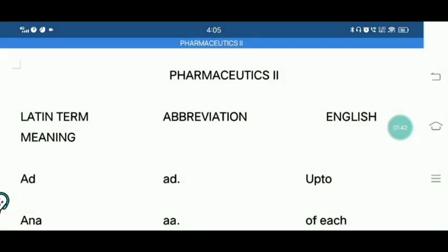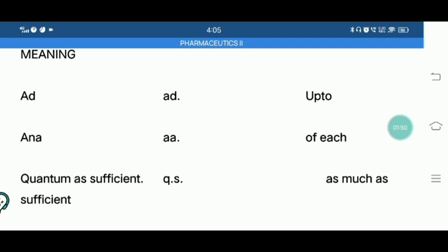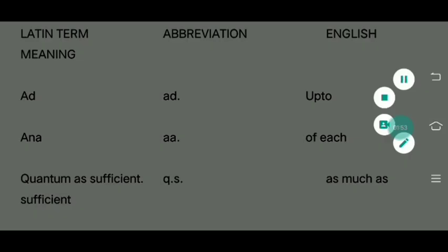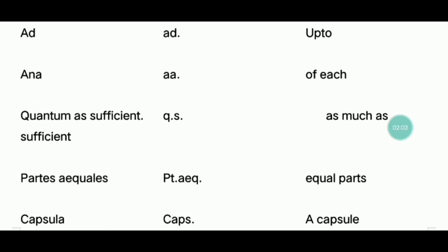Ad — meaning 'up to'. I will tell you how easy it is to memorize. A, or aa, means 'of each' — one of each.